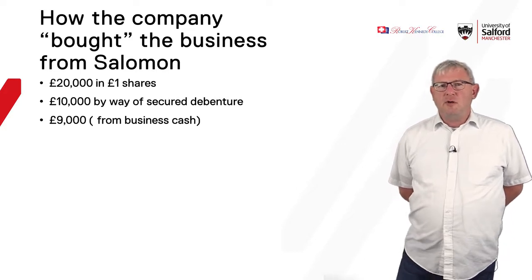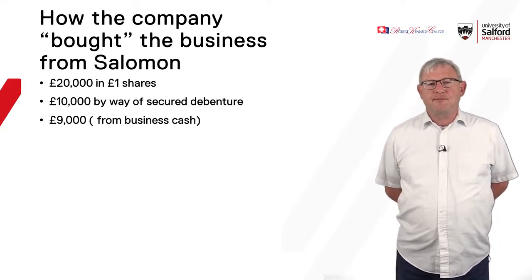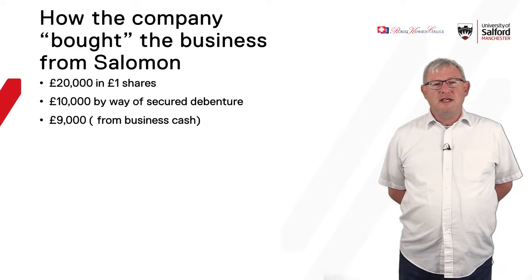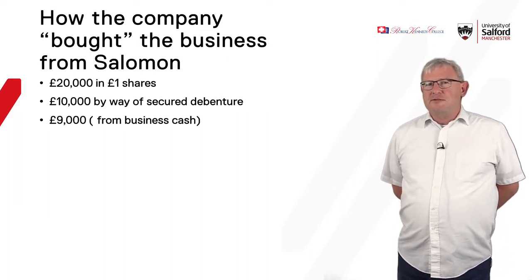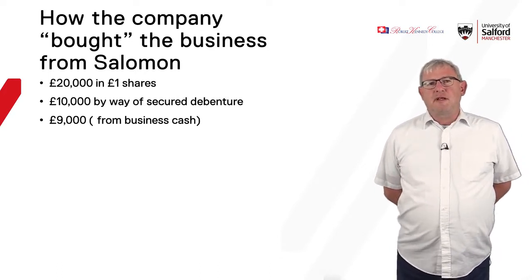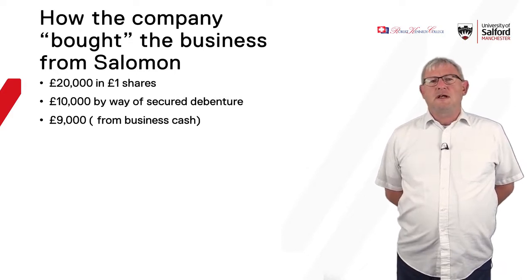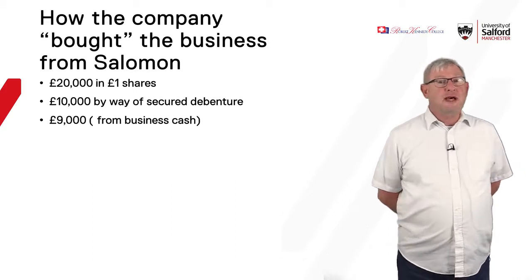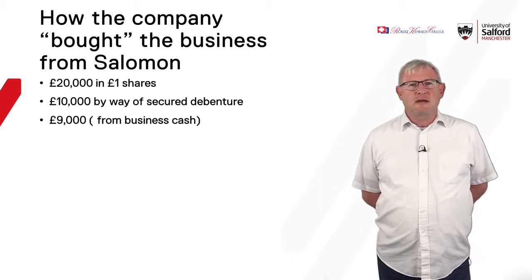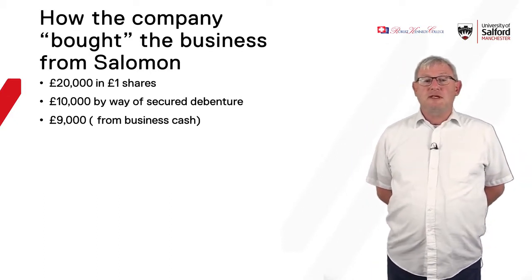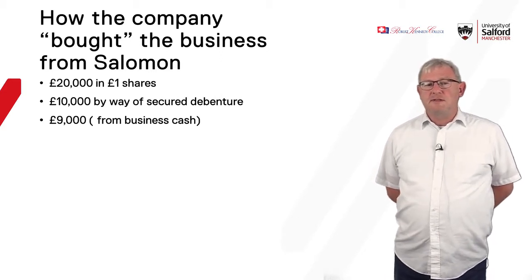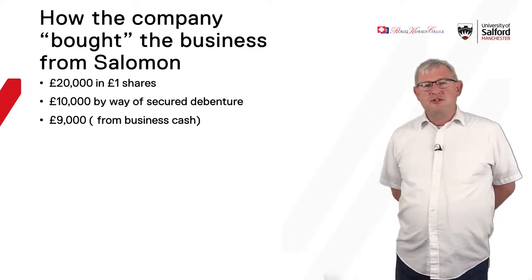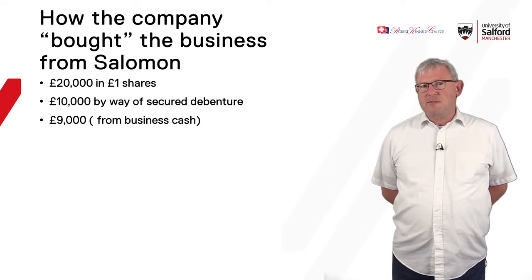The company had a share capital of £40,000. The business itself was valued — some at the time said overvalued — at £39,000. Because the business was owned by Mr Salomon personally, he had to sell the business to the company. The newly incorporated company bought the business from Mr Salomon, and the way it paid was that Mr Salomon received £20,000 in £1 shares in the company. He also received a debenture — effectively a loan agreement — whereby the company owed him £10,000. He also received £9,000 in cash from the company. So in total Mr Salomon received £39,000: £9,000 in cash, £20,000 in shares, and £10,000 by way of a debenture.